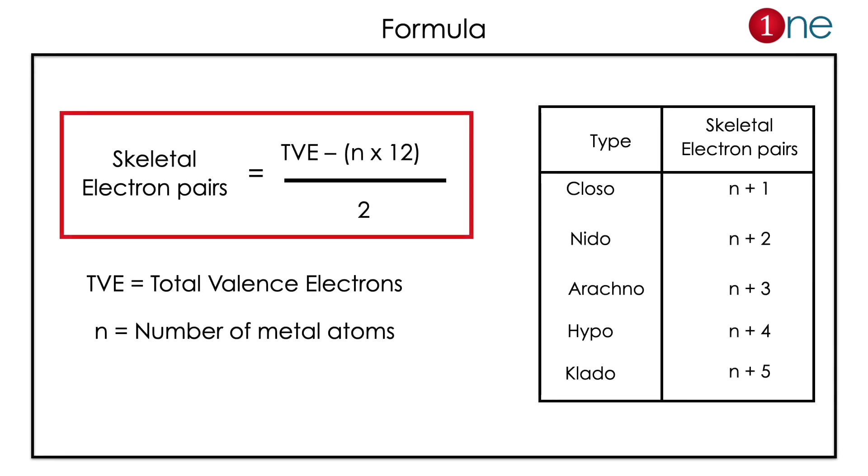Here the formula is based on the skeletal pair electrons. Normally you will count total valence electrons minus number of metal atoms multiplied by 12, whole divided by 2. TVE equals Total Valence Electrons, n equals number of metal atoms.